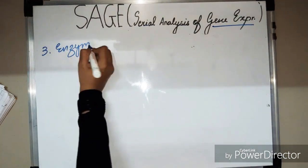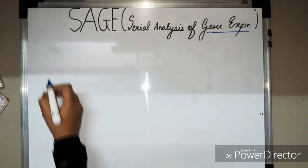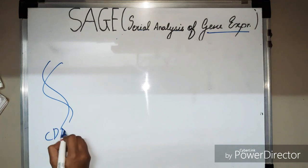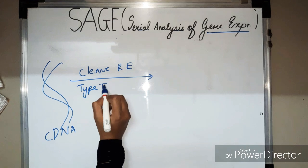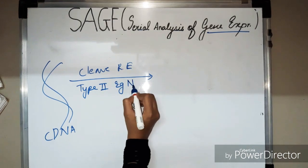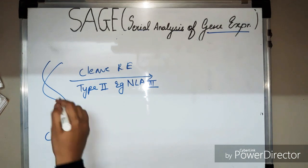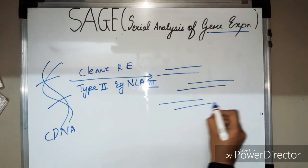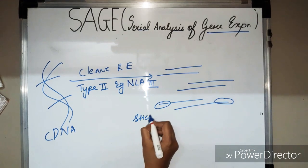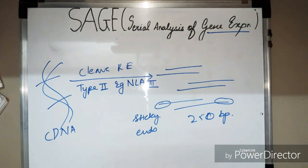The third step is enzymatic cleavage of cDNA. The cDNA molecule is cleaved with a restriction endonuclease — a type II restriction endonuclease; an example is the NlaIII restriction enzyme. This cleaves the cDNA into short fragments of approximately 250 base pairs with sticky ends on both sides.